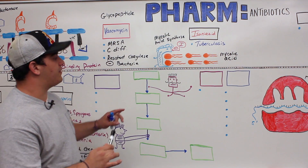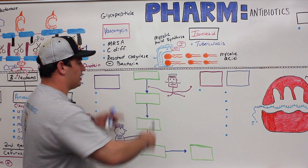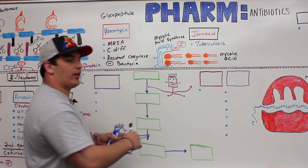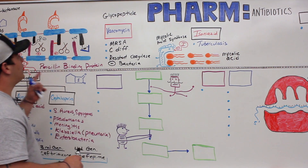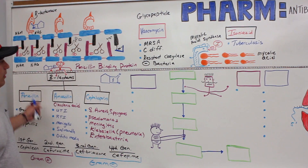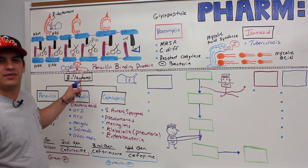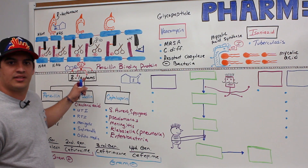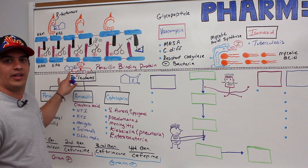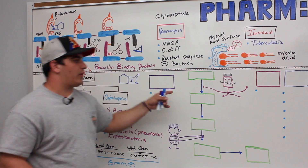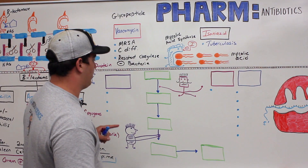Alright Ninja Nerds, in this video we're going to talk about the antibiotics used to treat this specific pathway called the folic acid pathway. We already talked about the antibiotics of cell wall synthesis and function, so if you haven't seen that video, go watch that. Now we're going to focus on the antibiotics for the folic acid pathway.